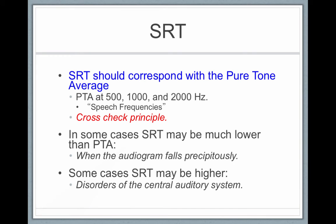There's a cross-check principle. The pure tone average — thresholds at 500, 1,000, and 2,000 Hz added and averaged — represents your speech frequencies. Your pure tone average threshold should correspond to your speech recognition threshold and be within 5 decibels of each other. That's how you verify accuracy. In some cases, such as a precipitously sloping audiogram, they might not correspond. If the SRT is more than 5 decibels higher than the pure tone average, that could indicate a disorder of the central auditory system.